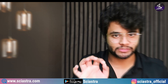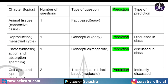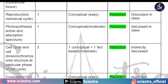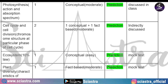As you can see in the document, one question came from animal tissues, specifically from connective tissue — it was a fact-based and easy question that we did not predict. The second question came from reproduction, specifically the menstrual cycle — a conceptual and easy question that was already predicted and discussed in class. The next question came from photosynthesis on the topic of action and absorption spectrum — a conceptual, moderate-level question that was already predicted and discussed in class.